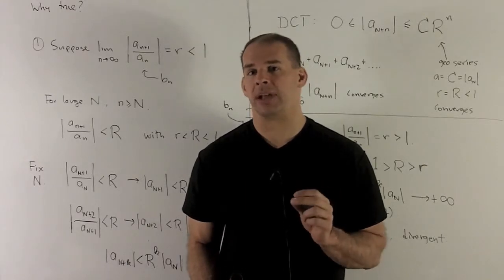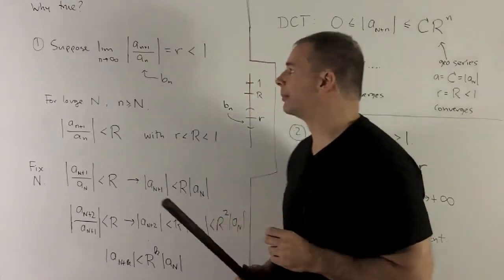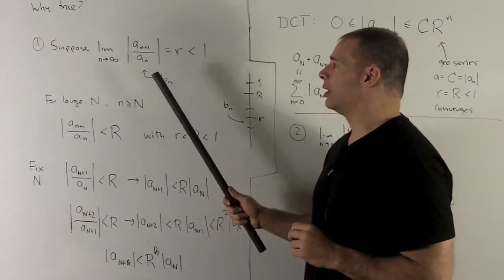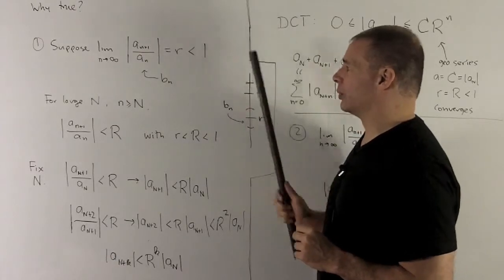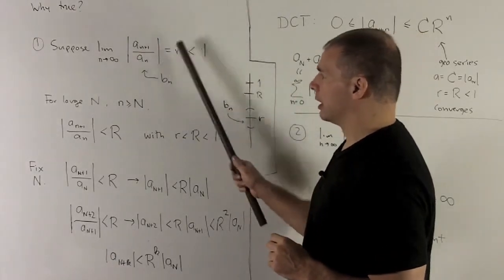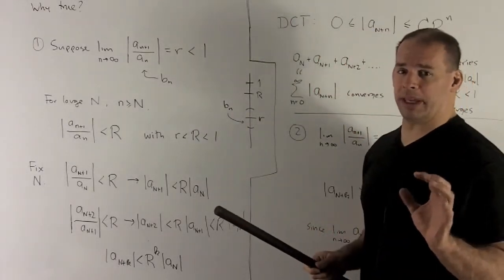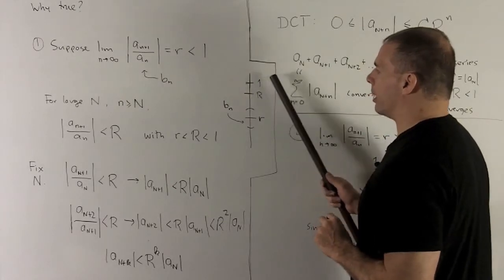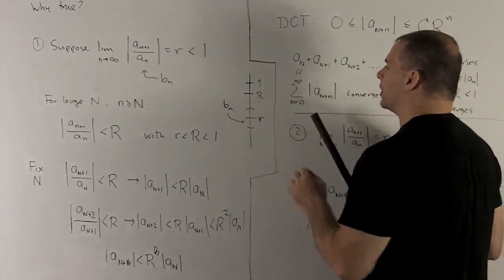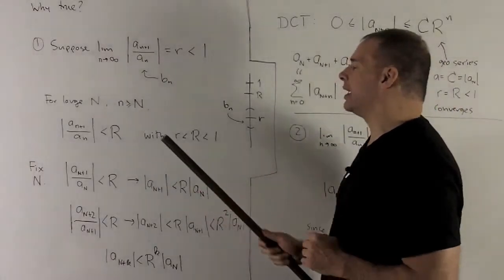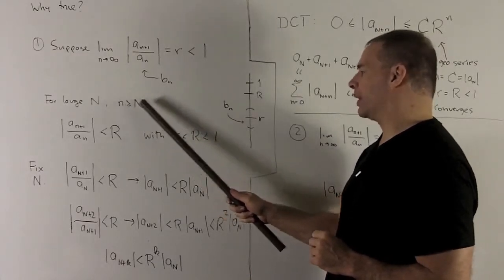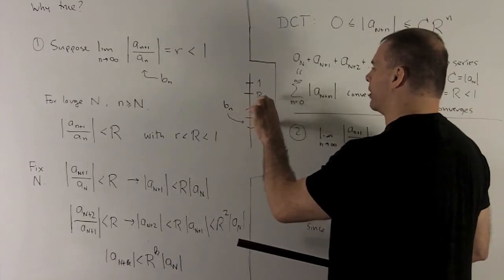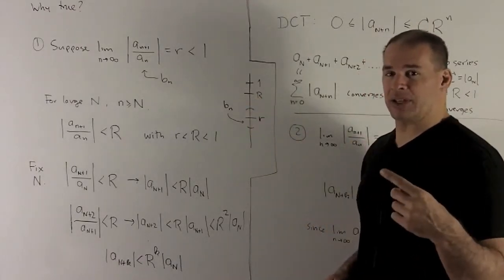Why is the ratio test true? It all comes down to comparison with geometric series. Consider the convergence case: the limit as n goes to infinity of the absolute value of a sub n+1 over a sub n equals r, strictly less than 1. Let's call the expression inside the limit b sub n. Convergence to r means we can find some capital N such that for any small n bigger than capital N, all of those b sub n's are trapped in an interval around r. We choose the interval so that its top is still on this side of 1.